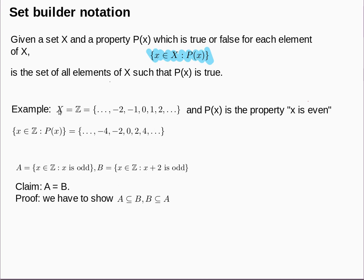For example, we might take the set X to be the integers. Traditionally we use the blackboard bold Z to denote the set of all integers — all whole numbers, positive or negative. We might take the property P to be that a particular integer x is even. Then the set written in set builder notation means the set of all integers x such that x is even — the set of all even integers, which contains things like −4, −2, 4, 6, a million, and so on.